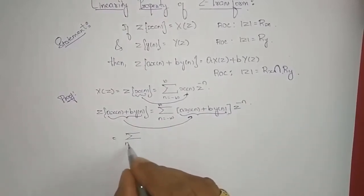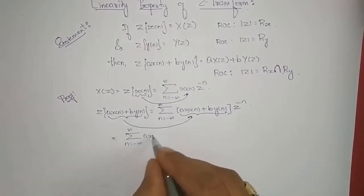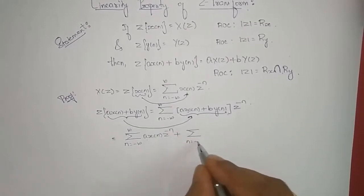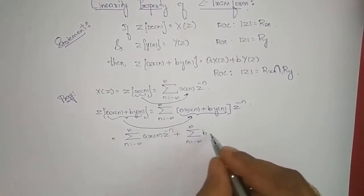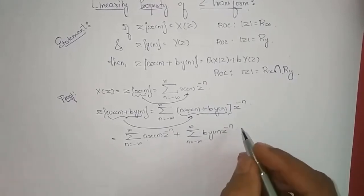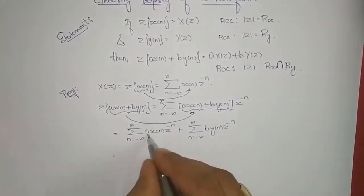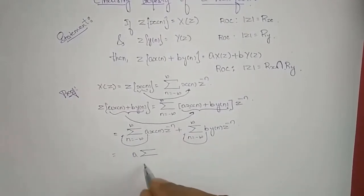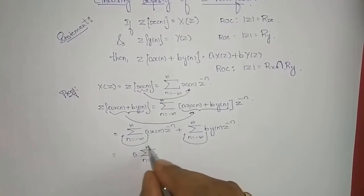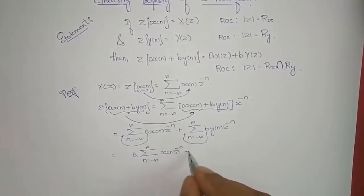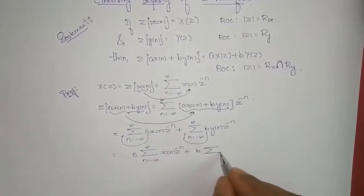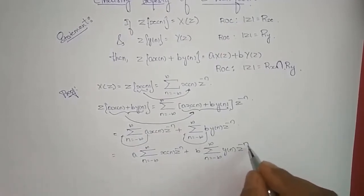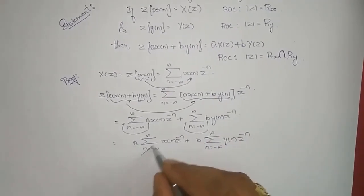Now we rearrange this by multiplying the summation with the term z to the power of minus n. What we get is: summation with n varying from minus infinity to infinity of a times x(n) times z to the power of minus n, plus summation with n varying from minus infinity to infinity of b times y(n) times z to the power of minus n. Since a and b are constants, we can take them out.